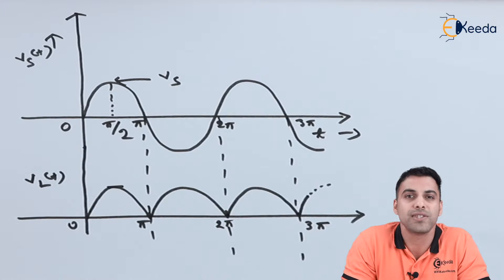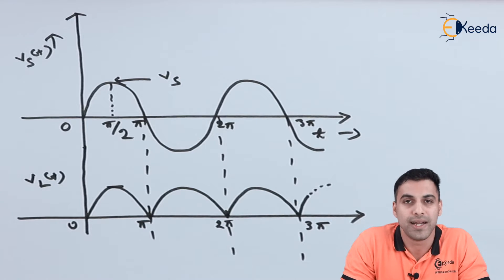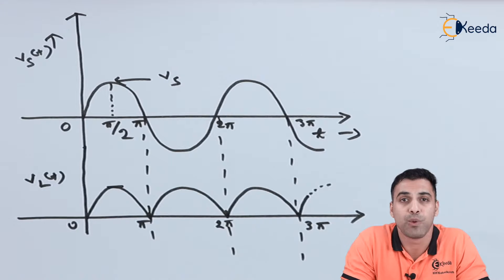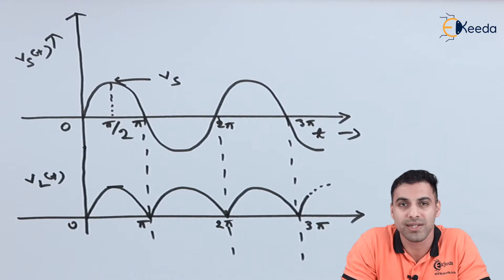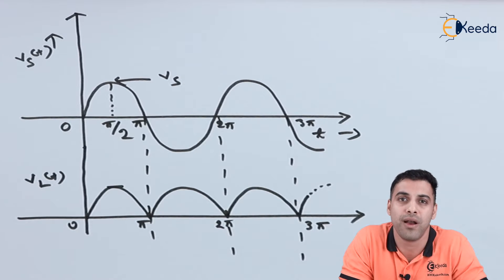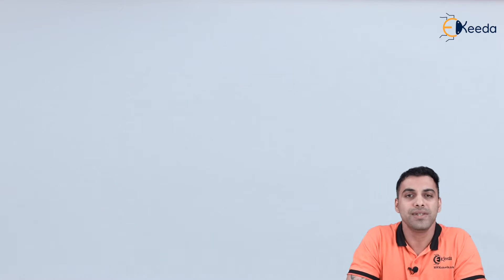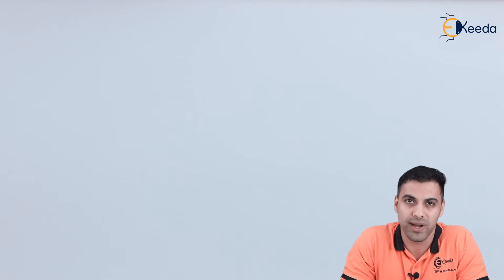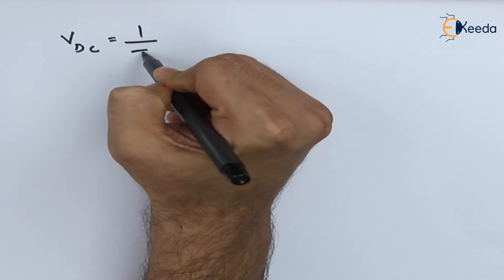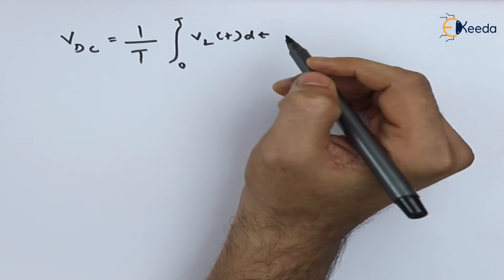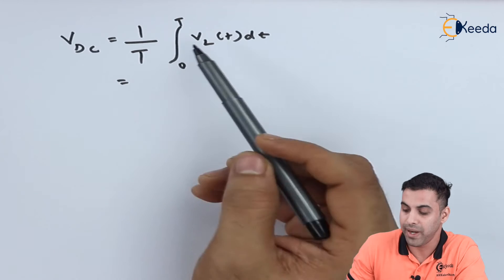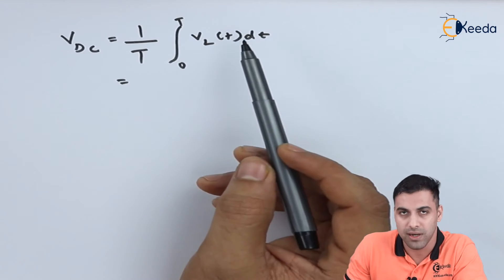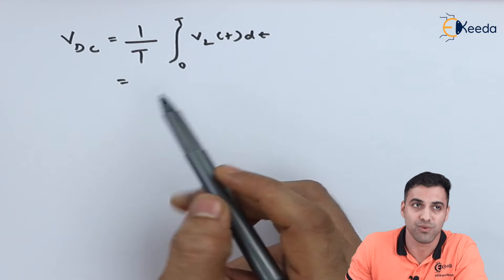Now let's calculate the value of the load voltage, the DC voltage, the load current, DC current, and most importantly the efficiency. We will compare the efficiency of a full wave rectifier with a midpoint connection against the half wave rectifier. The value of the DC voltage is given mathematically as one over T times the integral of the instantaneous load voltage, with limits of integration from 0 to T.